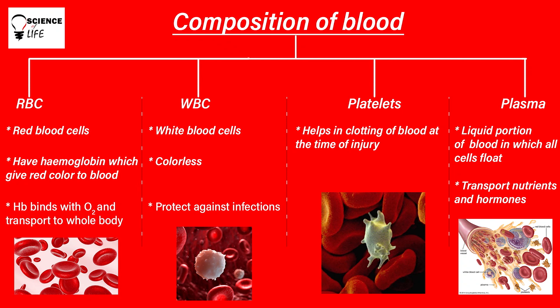Coming to the second component, that is WBC — white blood cells. White blood cells do not have any hemoglobin, so their color is white, or we can say they are colorless. The function of WBC is that they protect us against infections and diseases, so obviously they are also very important.